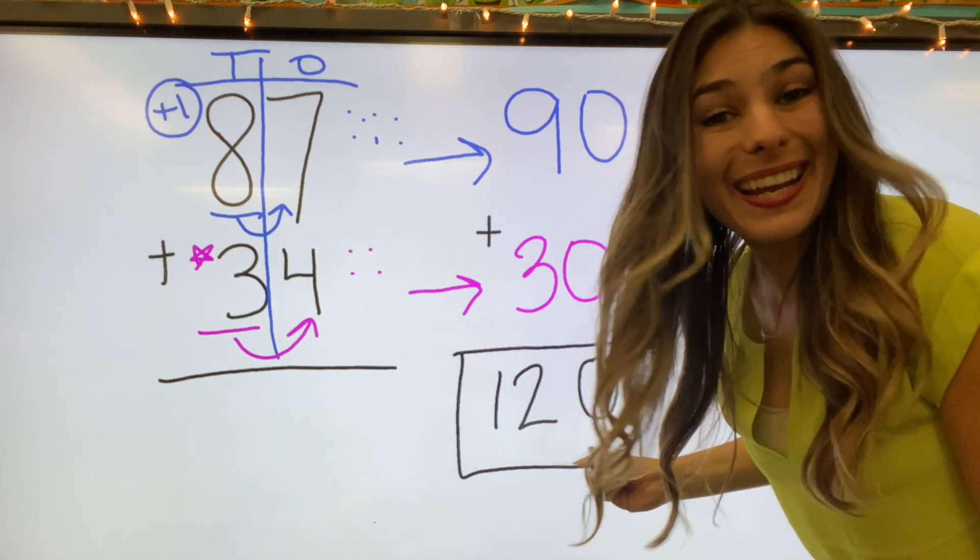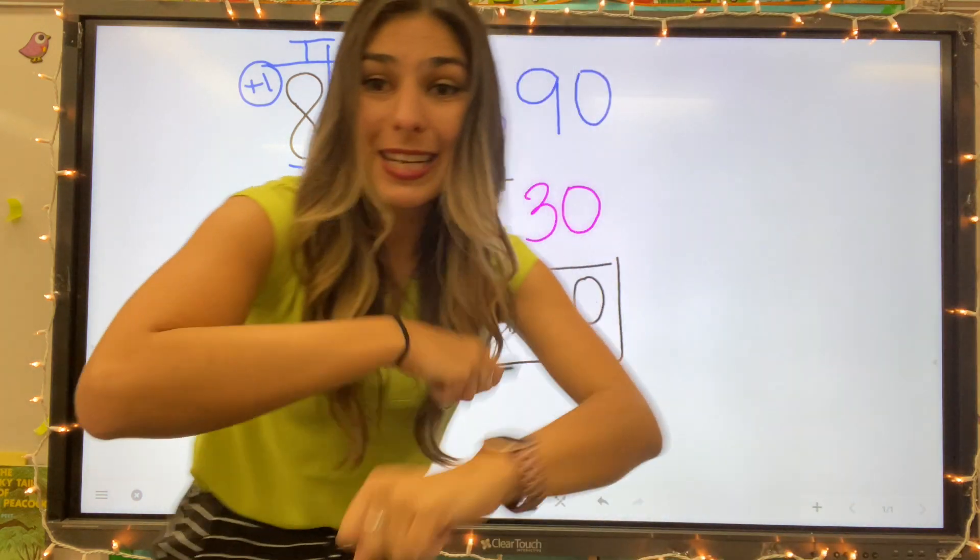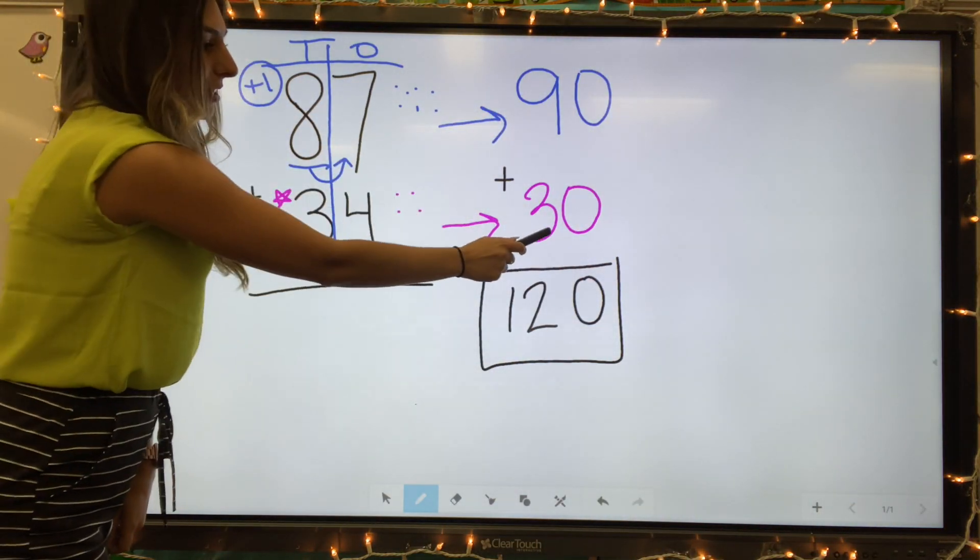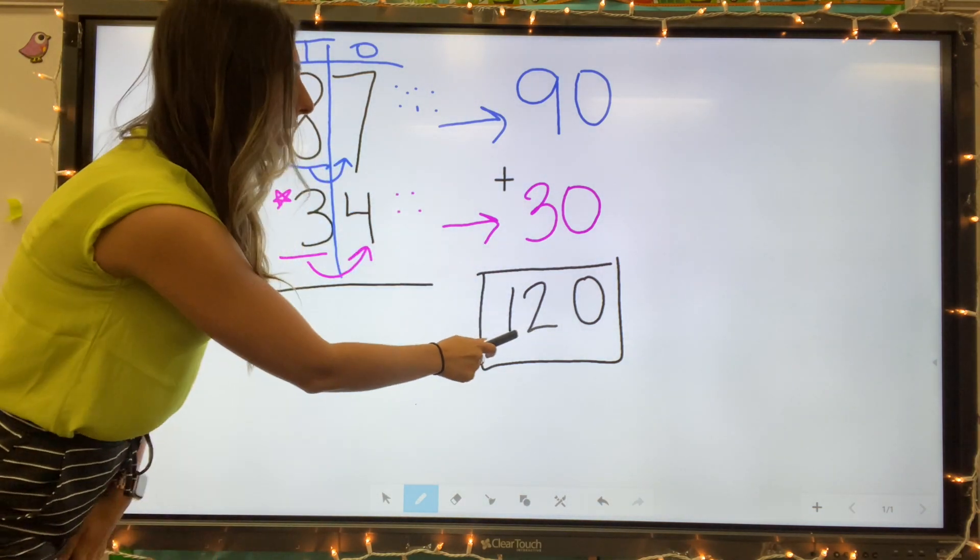So my answer is 120. So let's go back over our steps. First, we rounded each number. The 87 goes to 90 and 34 ran into 30. We added them up and found the estimated sum is 120.